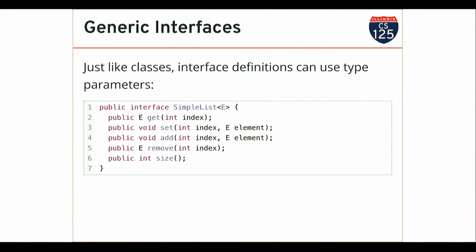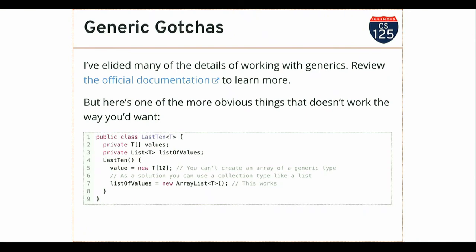Interfaces can also use type parameters — and do use them. Here's an example of an interface that accepts a type parameter. That type parameter is used throughout the interface to indicate methods the class should implement and where the type should play a role. For example, this says: if you implement an interface SimpleList that takes a type parameter, your get method should return an instance of that type.